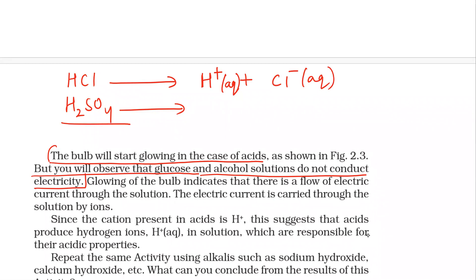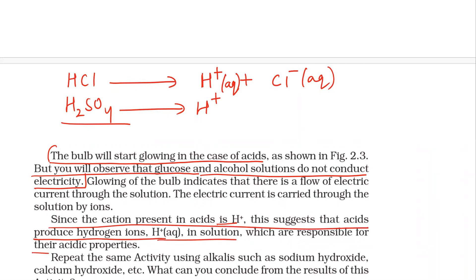These ions are responsible for the conduction of electricity. Similarly, H2SO4 will also give out H⁺ ions and sulfate ions. But in the case of glucose and alcohol, they will not dissociate into H⁺ ions. So glucose and alcohol do not dissociate into H⁺ ions; therefore they do not conduct electricity. Since the cation present is H⁺, this suggests that acids produce hydrogen ions, which are responsible for their acidic properties.